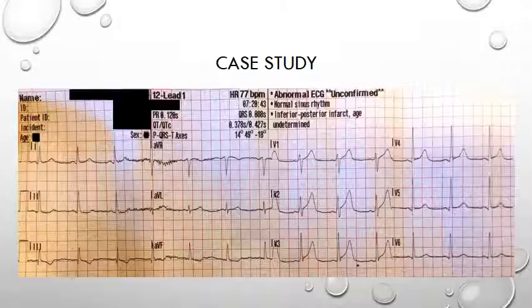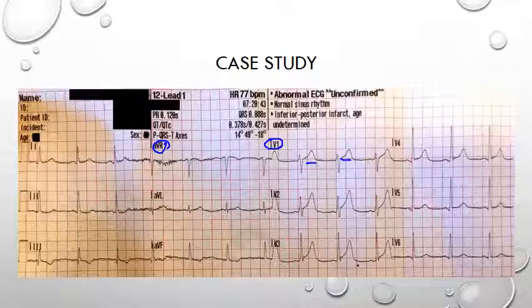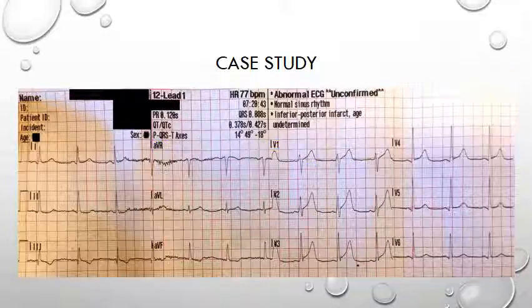Normal T waves should be upright in all leads except AVR and lead V1. With the positive T waves seen here, we already have an abnormality. T waves shouldn't be more than 5mm tall in the limb leads or 15mm tall in the precordial ones. Abnormalities include being hyperacute, inverted, biphasic, or flattened — but for this video we're concentrating on the hyperacute ones.